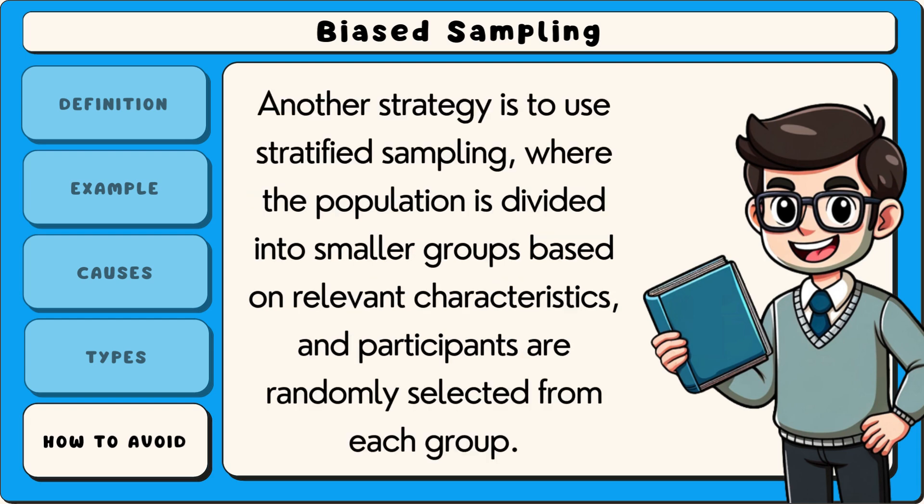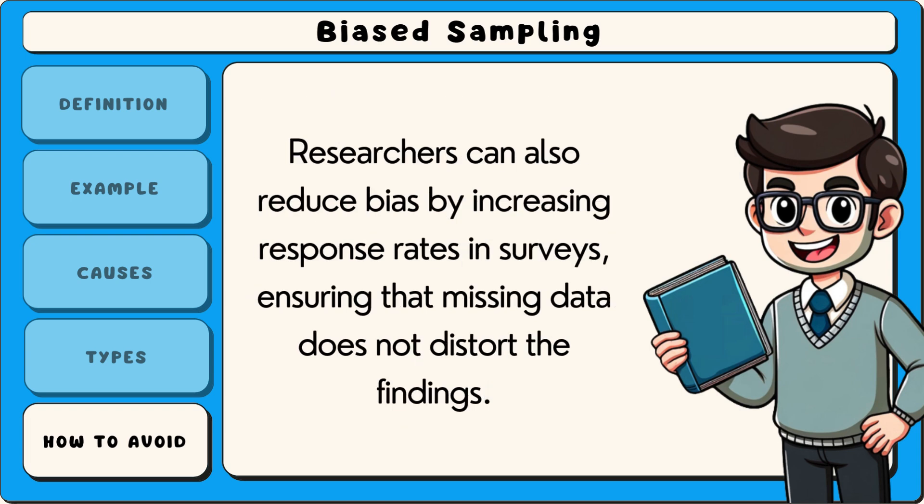Another strategy is to use stratified sampling, where the population is divided into smaller groups based on relevant characteristics, and participants are randomly selected from each group. Researchers can also reduce bias by increasing response rates in surveys, ensuring that missing data does not distort the findings.